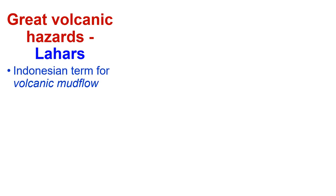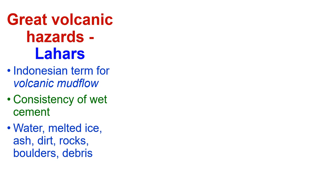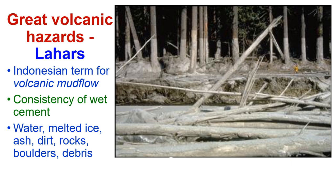There was a great volcanic hazard called a lahar — an Indonesian term for volcanic mud flow. It's the consistency of wet cement. When you've got water, melted ice, ash, dirt, rocks, and debris all together, it forms a huge mud flow. And there are the results — the leftovers from the mud flow. Right here on the top of the trees shows how high the mud flow had risen. Here in comparison is a person walking across the land after it subsided.